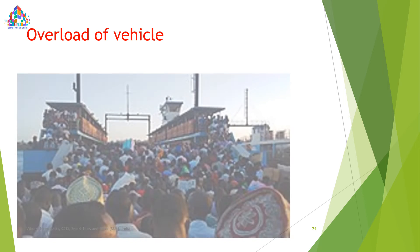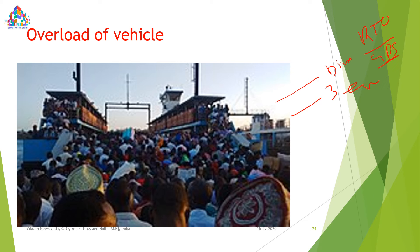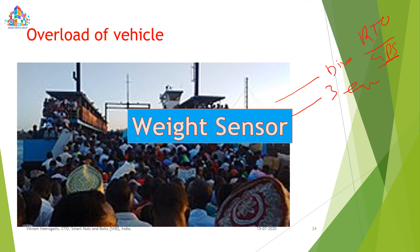For vehicle overload detection: in auto-rickshaws or cars, more than the permitted number of passengers often sit. This application automatically sends an alarm to the driver three times every minute if the weight is too high. If the driver does not reduce the load, a message with the GPS location and vehicle number is sent to the RTO office for action. A weight sensor is placed on the bottom of the vehicle body to detect overloading.